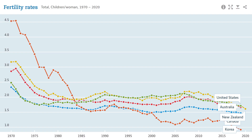According to OECD data, fertility rates have been falling significantly over the last few decades, with most developed countries now below replacement levels. People in developed countries are simply not having enough children to replace their populations. There are many reasons for this, but it is largely due to women's changing roles, employment shifts, and advances in reproductive health.